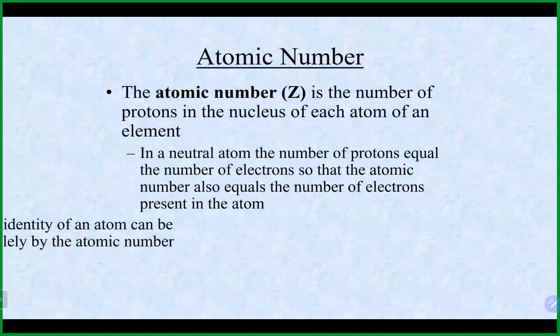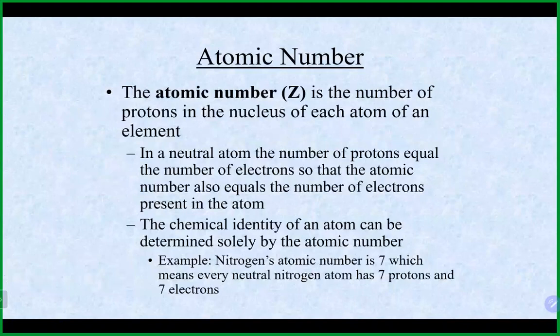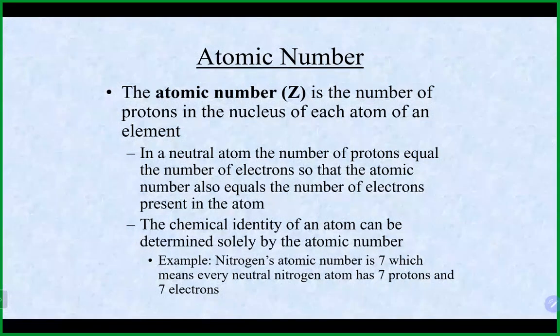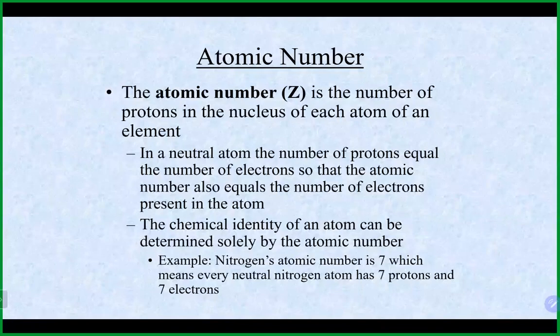Starting with atomic numbers: the atomic number, sometimes abbreviated as Z, is defined as the number of protons in each atom of an element. In a neutral atom, the atomic number also tells you how many electrons there are, because you need an equal number of negative charges to balance the positive charges.